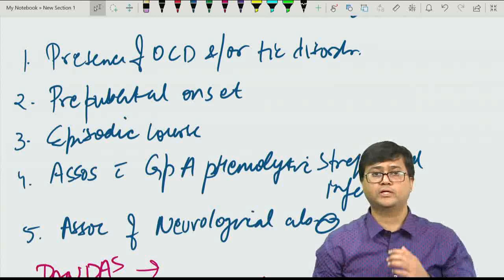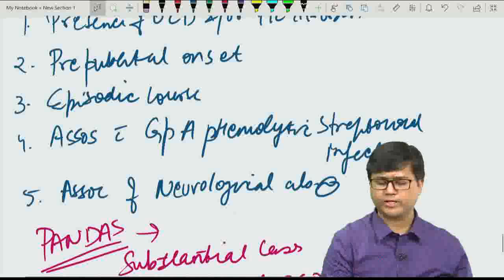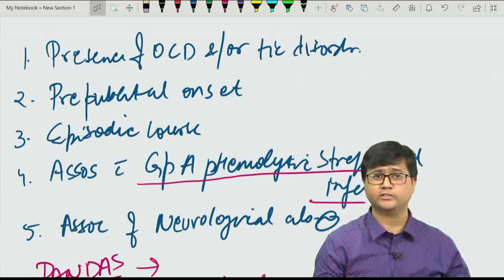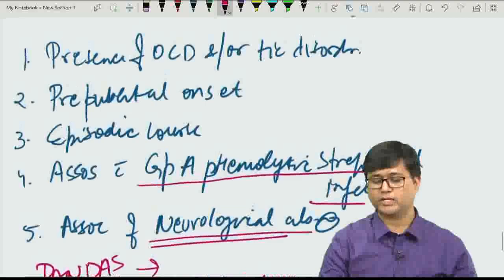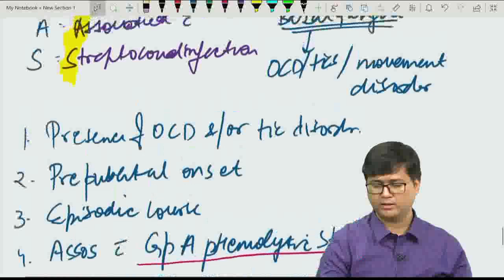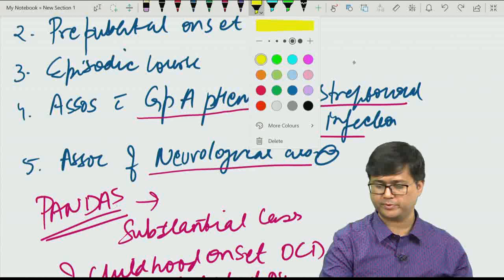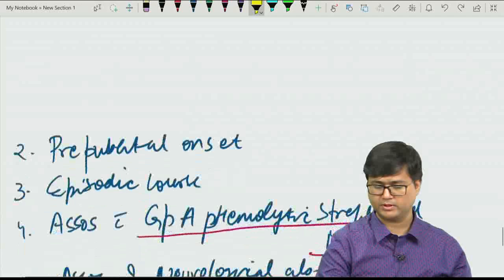For example, if a child at pre-pubertal age develops fever and sore throat with confirmed beta-hemolytic streptococcal infection, and subsequently presents with obsessive-compulsive symptoms and/or tic disorder with neurological abnormality, we would diagnose it as PANDAS. The key point is that it is associated with streptococcal infection.